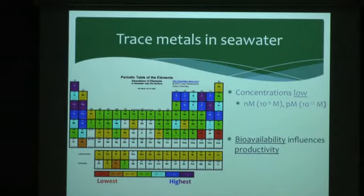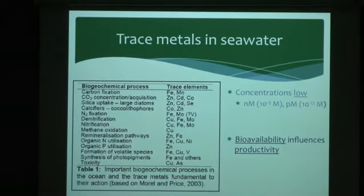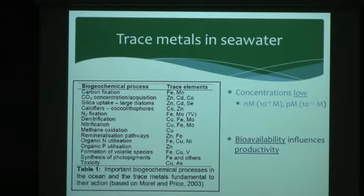These elements are really important for biology in the ocean. The bioavailability of trace elements — referring not only to the concentration of the element but also the chemical form it's present in, the speciation — heavily influences biological productivity. This table from a paper by Morell and Price shows the different biogeochemical processes that trace elements are essential for: photosynthesis, respiration, macronutrient uptake, and macronutrient processing. Nitrogen fixation, for example, requires iron and molybdenum.